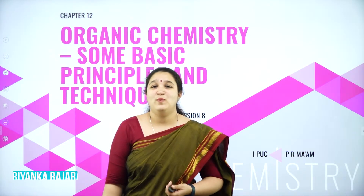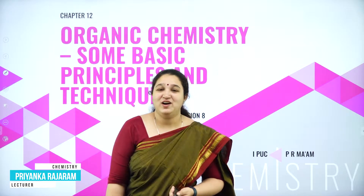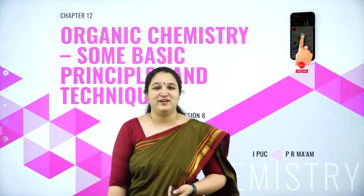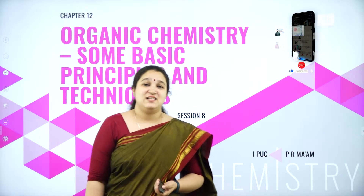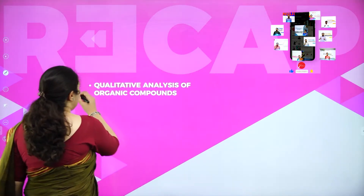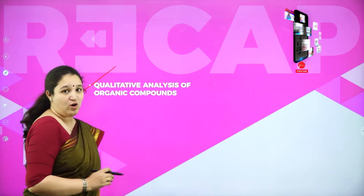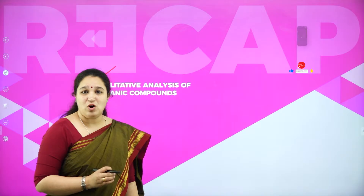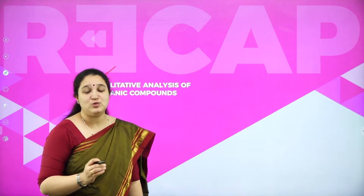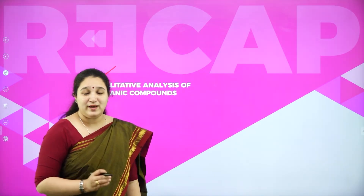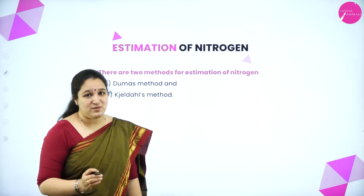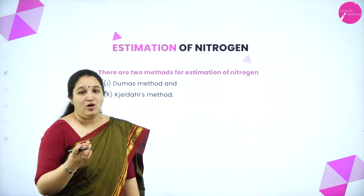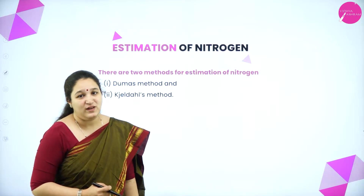Hello my dear students, welcome back to session 8 on the chapter 'Some Basic Principles and Techniques of Organic Chemistry.' Last class we studied about the qualitative analysis of organic compound — that is Lassaigne's test — and quantitative analysis of carbon and hydrogen using Liebig's method. Today we learn about the estimation of nitrogen as well as halogen, and also we'll solve some problems.